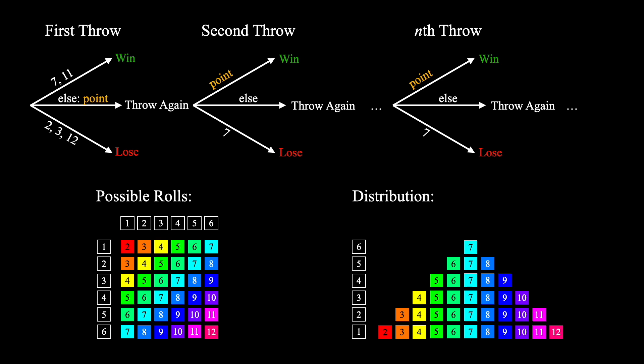Since we know that there are 36 possible outcomes, we can simply take the frequency of each individual outcome in the distribution and divide that by the total number of outcomes to get the probability of any individual value. For example, the probability of rolling a 7 in this case is simply 6, the frequency of 7, divided by 36, the total number of possible outcomes.